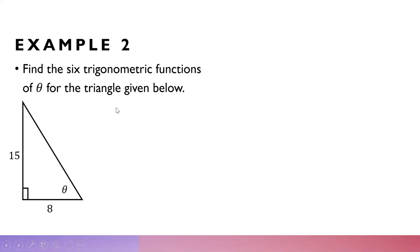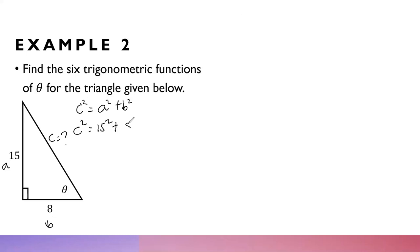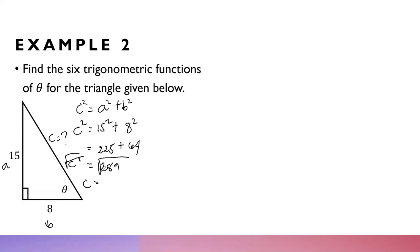Example 2: Find the six trigonometric functions of theta for the given triangle. Again, the hypotenuse is unknown. Suppose this is A, this is B, and C is unknown. Using C squared equals A squared plus B squared, with A equal to 15 and B equal to 8: C squared equals 225 plus 64 equals 289. Taking the square root of both sides, C equals 17. So the hypotenuse is 17.